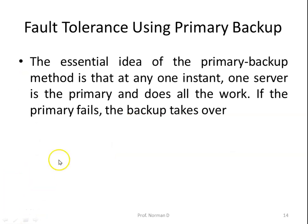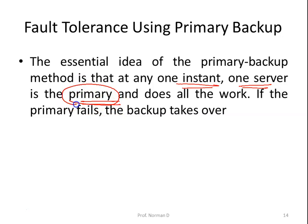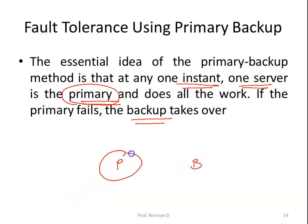Now we move to fault tolerance using primary backup. The essential idea is that at any one time one server is the primary and does all the work. Only if the primary fails does the backup take over. This is completely different from active replication, where servers work simultaneously in parallel. In primary backup we have only two systems: one primary and one backup.